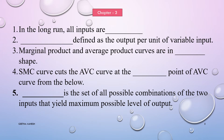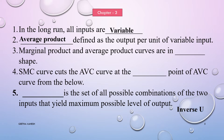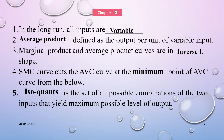Let us discuss a few important fill in the blanks from the third chapter, production and cost. In the long run, all inputs are variable inputs. Average product is defined as output per unit of variable input. Marginal product and average product curves are in inverse U shape. The SMC curve cuts the AVC curve at the minimum point of the AVC curve from below. An isoquant is a set of all possible combinations of two inputs that yield a maximum possible level of output.